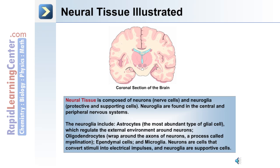Neuroglia are found in the central and peripheral nervous systems, and include the following cells: astrocytes, which are the most abundant type and regulate the external environment around the neurons; oligodendrocytes, which wrap around the axon of a neuron in a process called myelination; ependymal cells; and microglia.